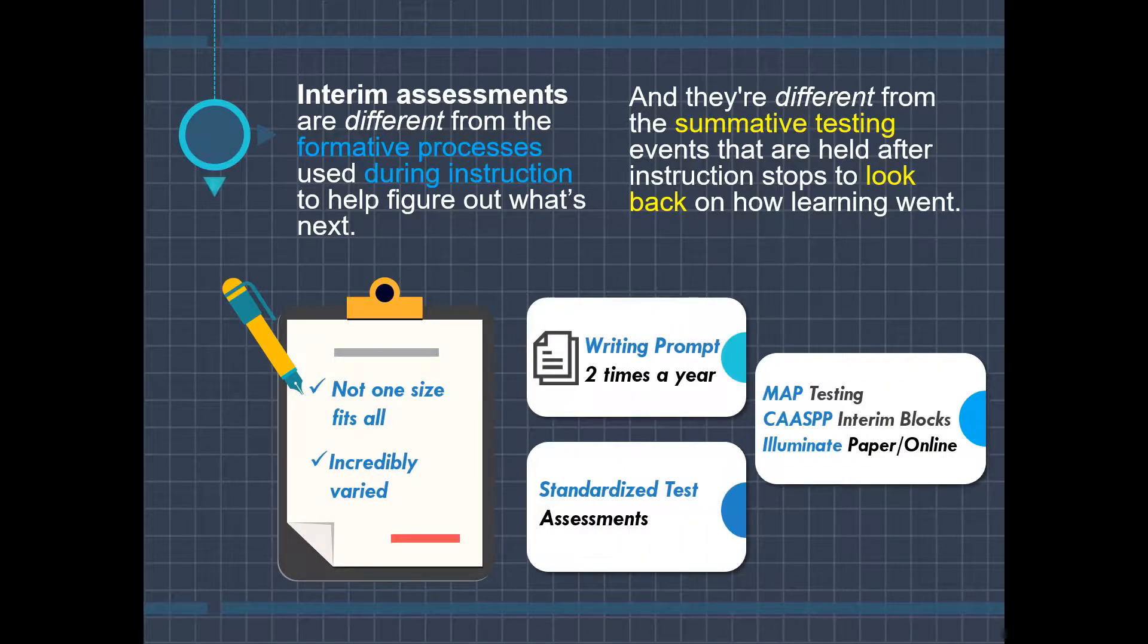Checking on student growth can be anything from a writing prompt that a teacher gives their class two times a year to a standardized assessment that some districts might choose to use, like MAP testing, CAASPP interim block assessments, or local assessments like the ones built in Illuminate.